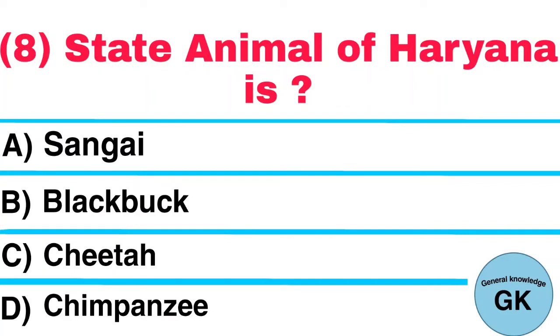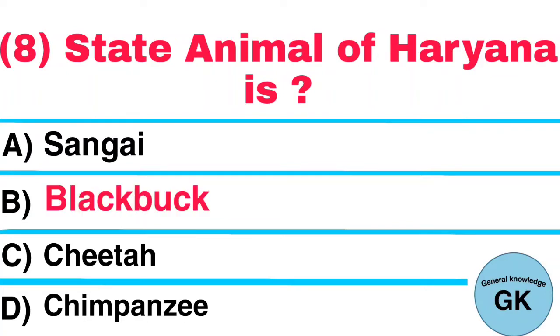Question Number 8. State Animal of Haryana is: A. Sangee, B. Black Buck, C. Cheetah, D. Chimpanzee. Answer: Black Buck.